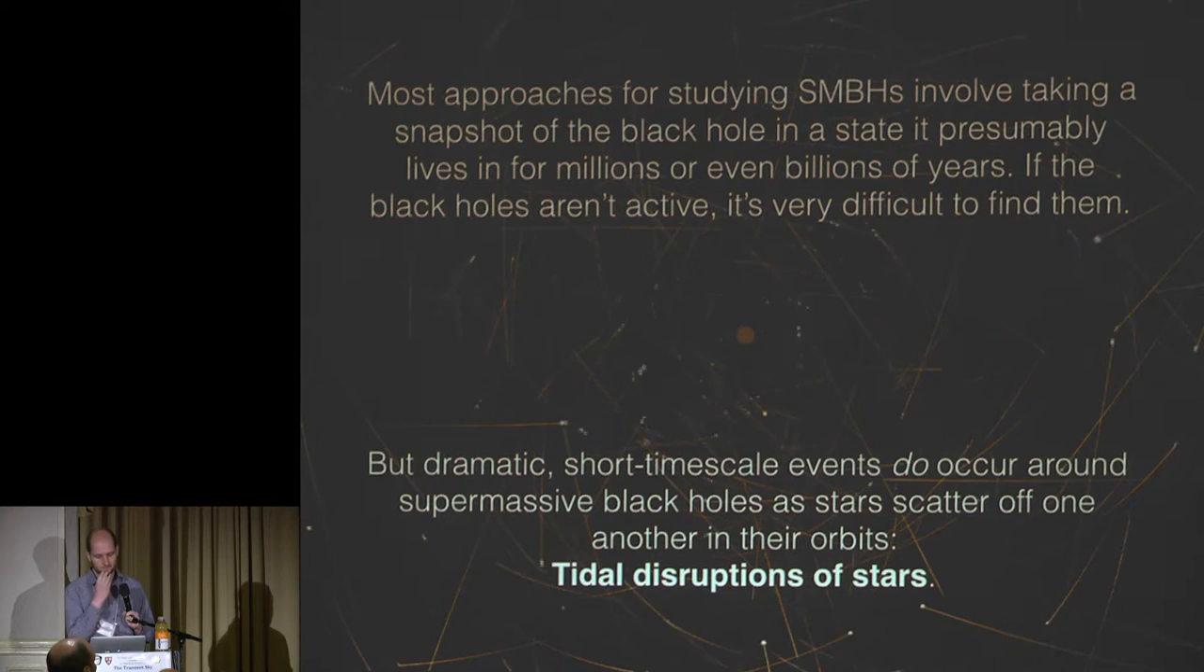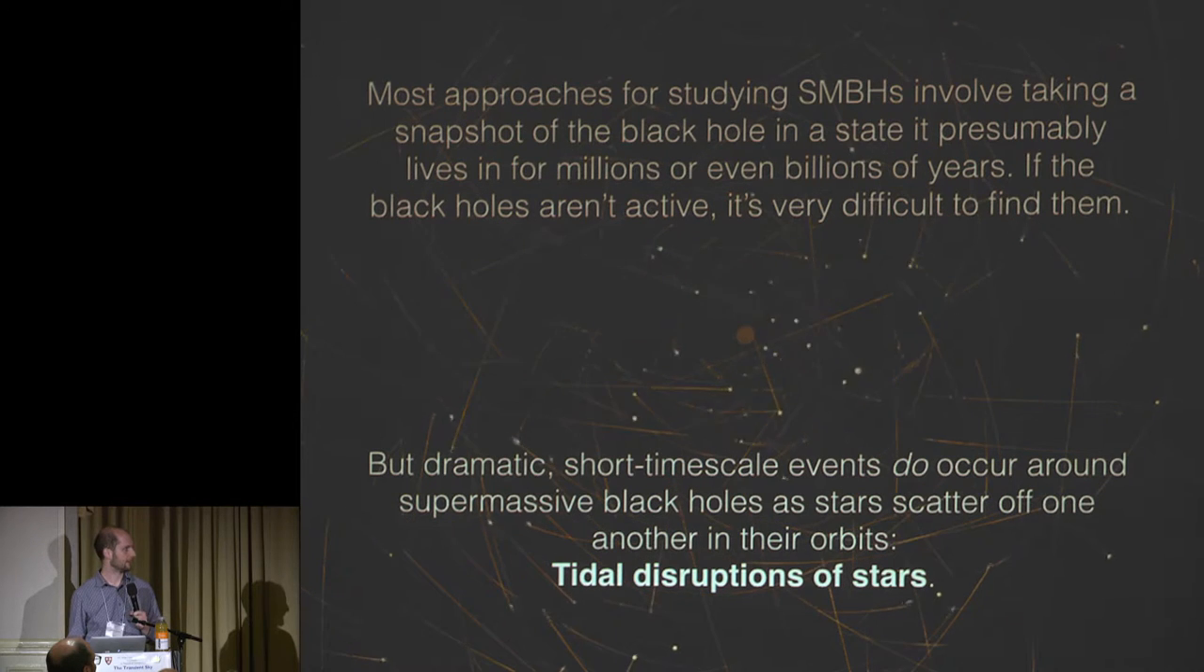Most things that study supermassive black holes are sort of long, persistent phenomena. Things like they're accreting near the Eddington limit and they stay bright for hundreds or thousands of years. They produce large-scale megaparsec jets. Or they're actively engaging in a merger with another black hole and you can see potentially transient episodes of gas accretion in those systems on a more human timescale. So there's only a few kinds of events that can really give you short, very luminous transient behavior around supermassive black holes. Tidal disruptions of stars are a very promising candidate.